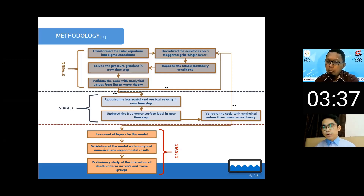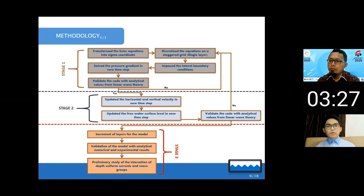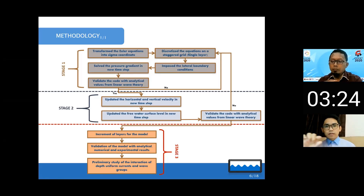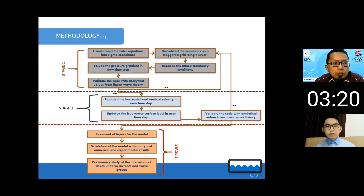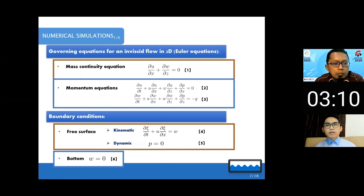Stage three is the increment of layers in the model. When coding, we start with the simplest things first — we begin coding our wave tank with only one layer of cells or grids, then we increase the number of layers more and more to make our model more complicated and more accurate.